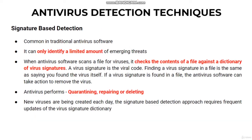Signature-based detection is the most common method that antivirus software uses to identify malware. This method is somewhat limited by the fact that it can only identify a limited amount of emerging threats — that is, generic or extremely broad signatures. When antivirus software scans a file for viruses, it checks the contents of a file against a dictionary of virus signatures. A virus signature is the viral code.